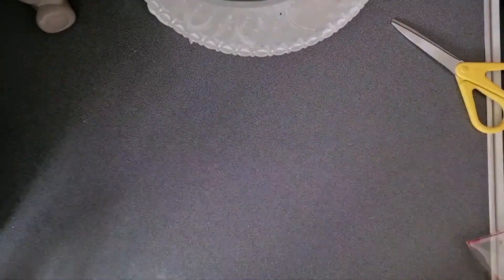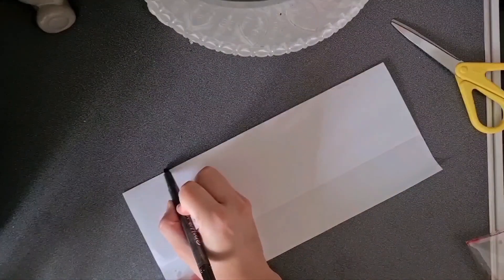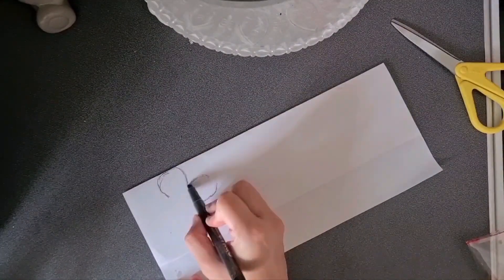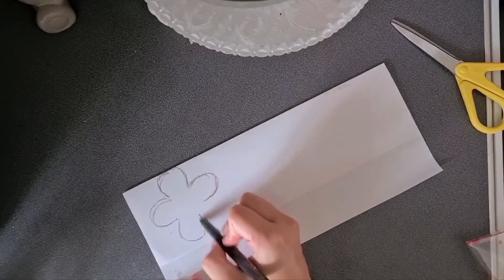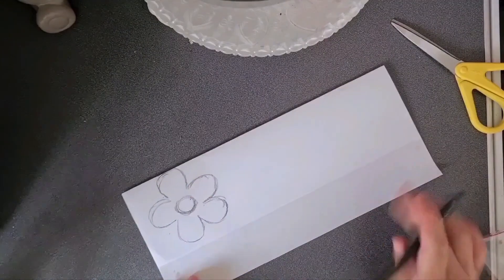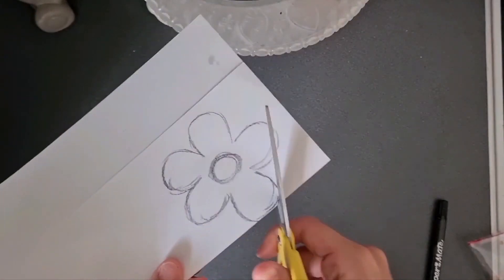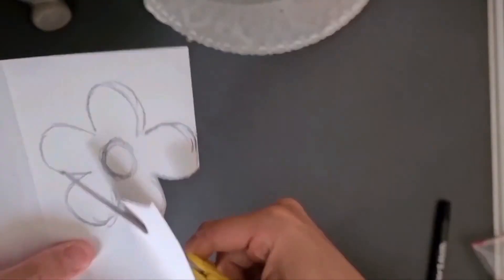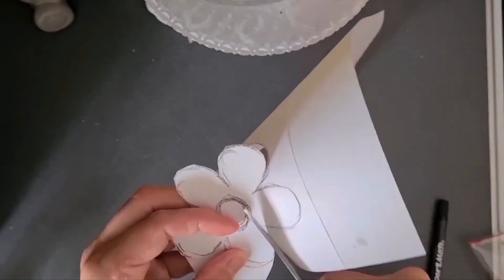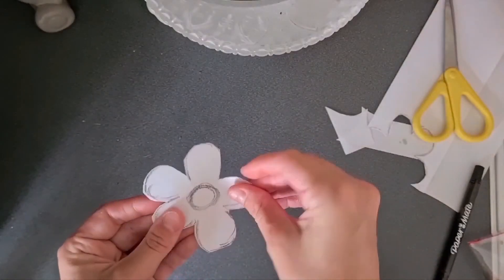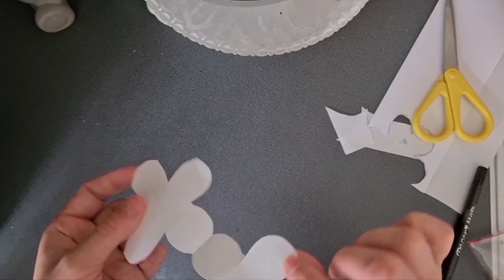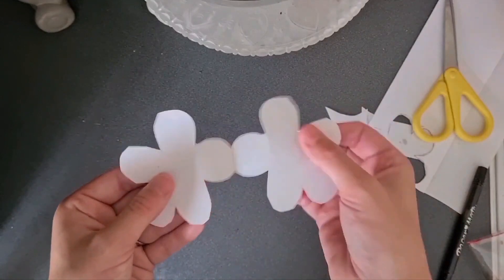I'm going to start off with the white paper and just fold it over like so. Now I want you to draw a flower but make sure that your flower extends right to the fold of the paper. And when you're cutting it out, don't cut the fold. This is because we need it to open and close so that it can reveal a hidden message. Just like that. Look, you can see the fold there.